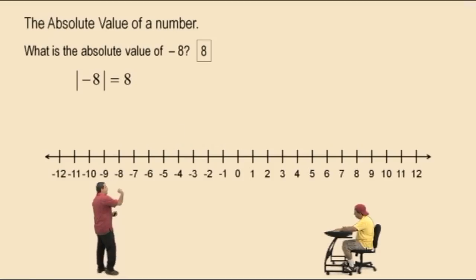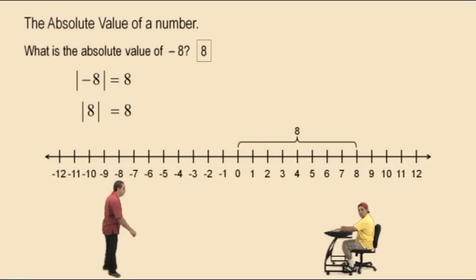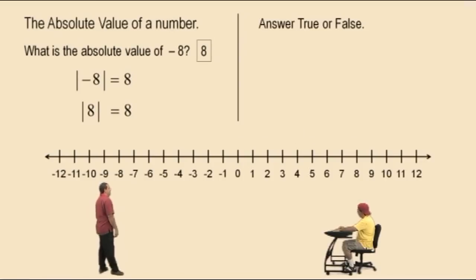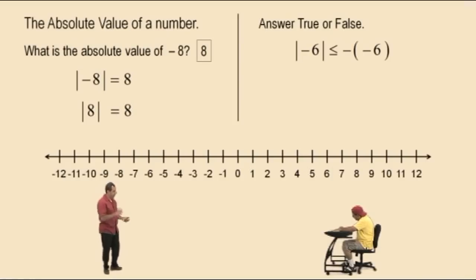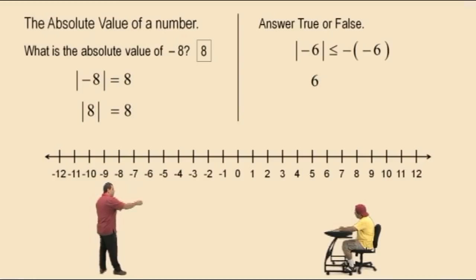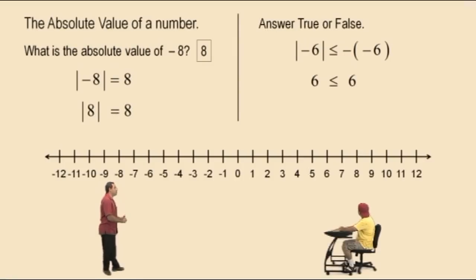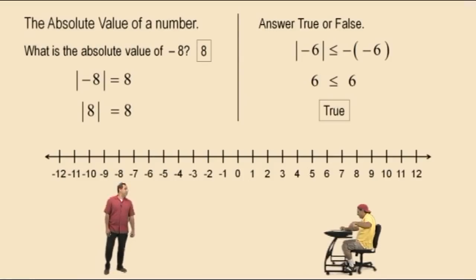Let's do some problems. Answer true or false: the absolute value of negative 6 is less than or equal to negative 1 times negative 6. The right-hand side, negative 1 times negative 6, is the additive inverse of negative 6, which is 6. So: the absolute value of negative 6 is 6. And negative 1 times negative 6 is 6. So is 6 less than or equal to 6? True! That is true.